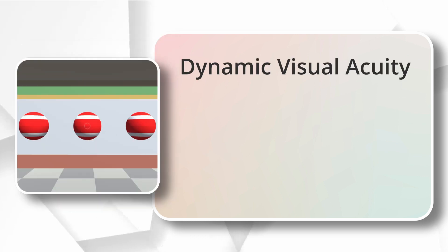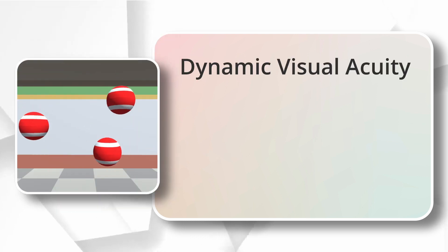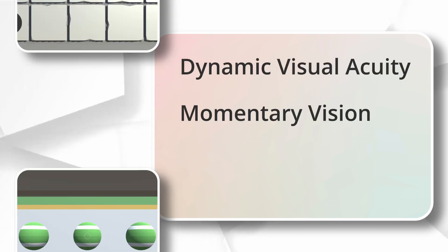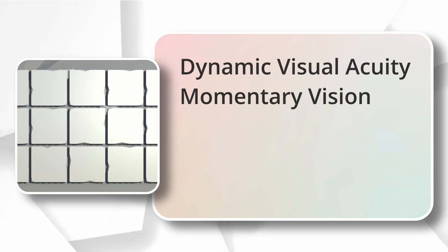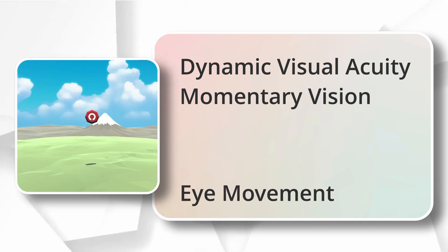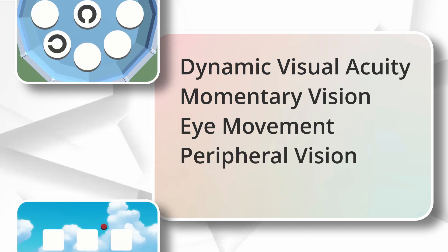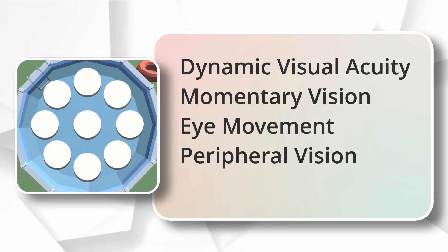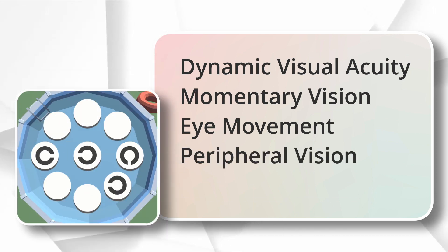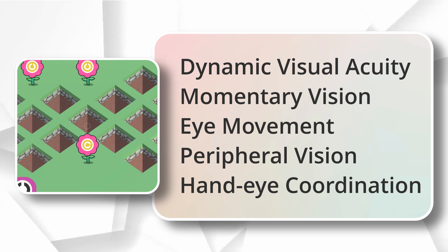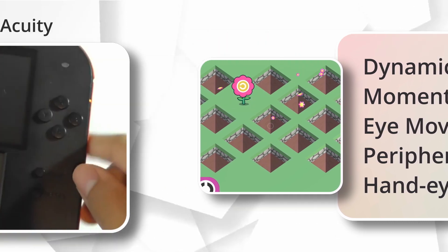Flash Focus breaks down the game types into the following: dynamic visual acuity, which is the ability to see moving objects; momentary vision, the ability to process a lot of information at once; eye movement, the ability to move your eyes quickly; peripheral vision, the ability to see around your central vision; and eye-hand coordination, the ability for your eyes and hands to work together.